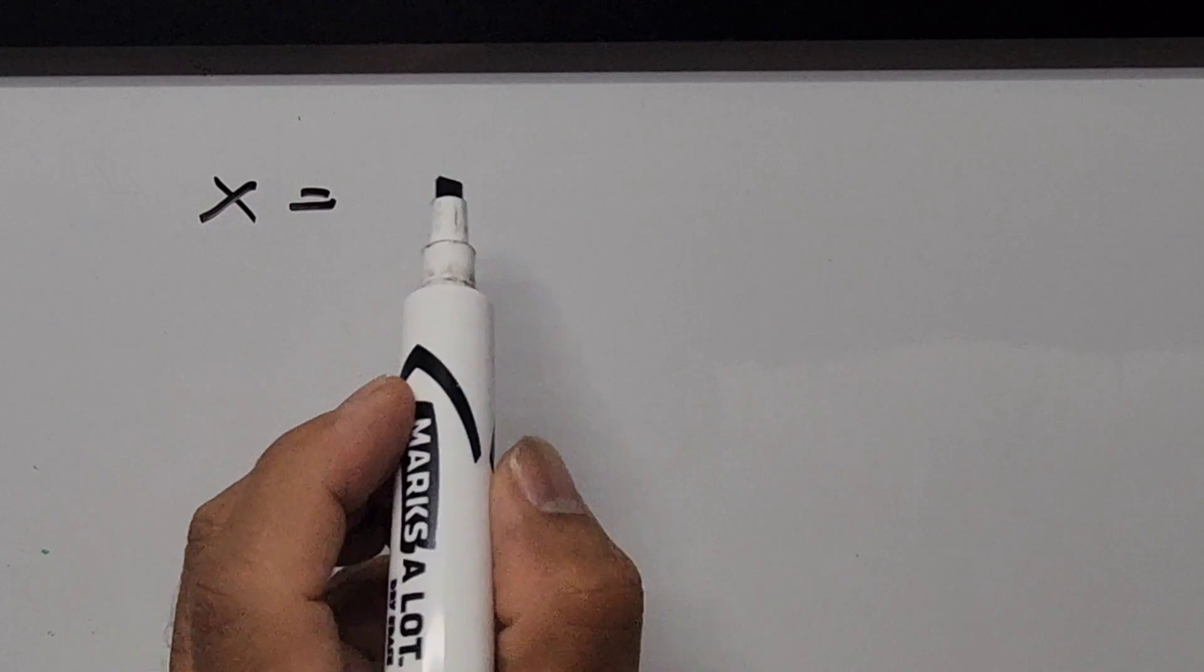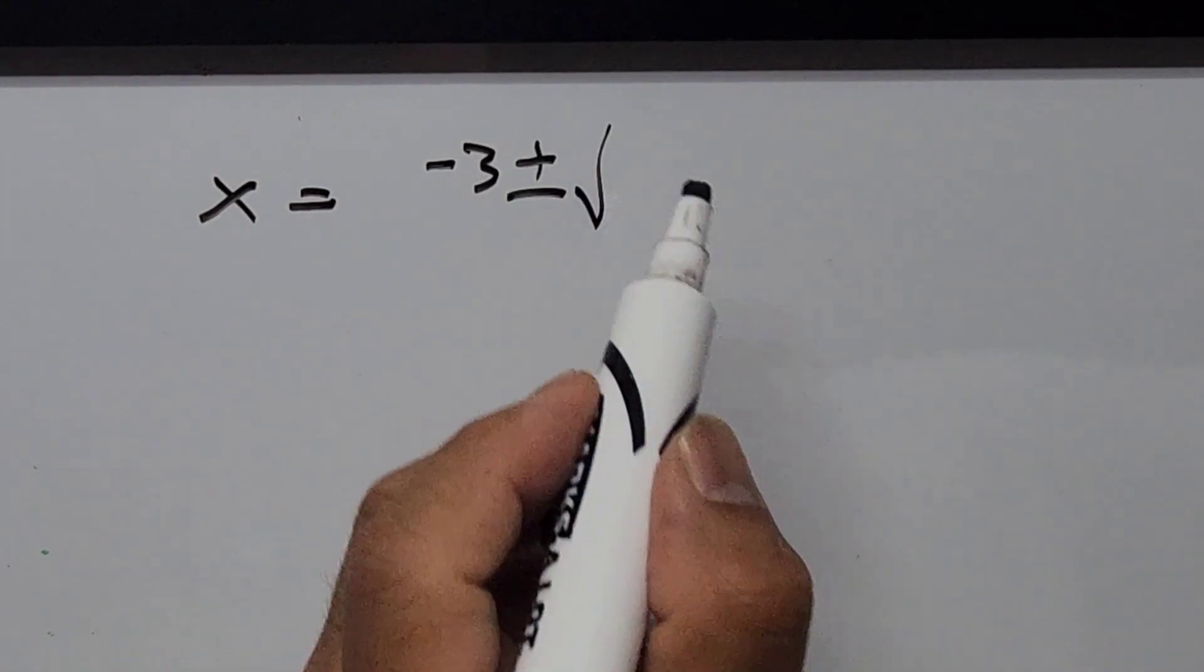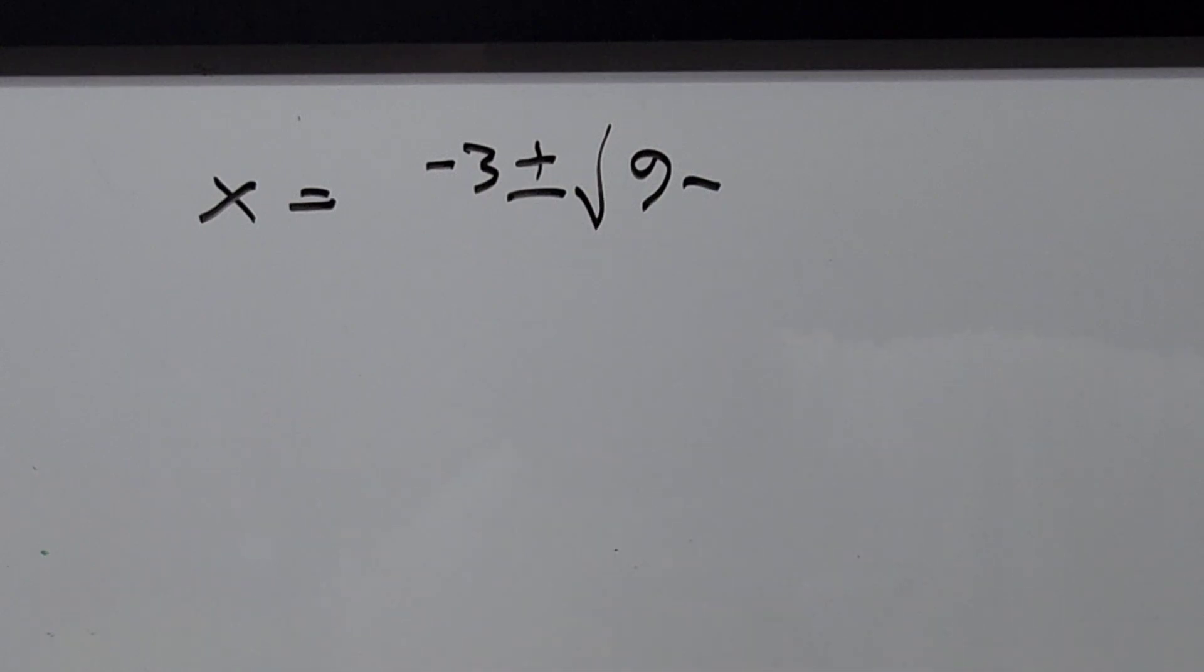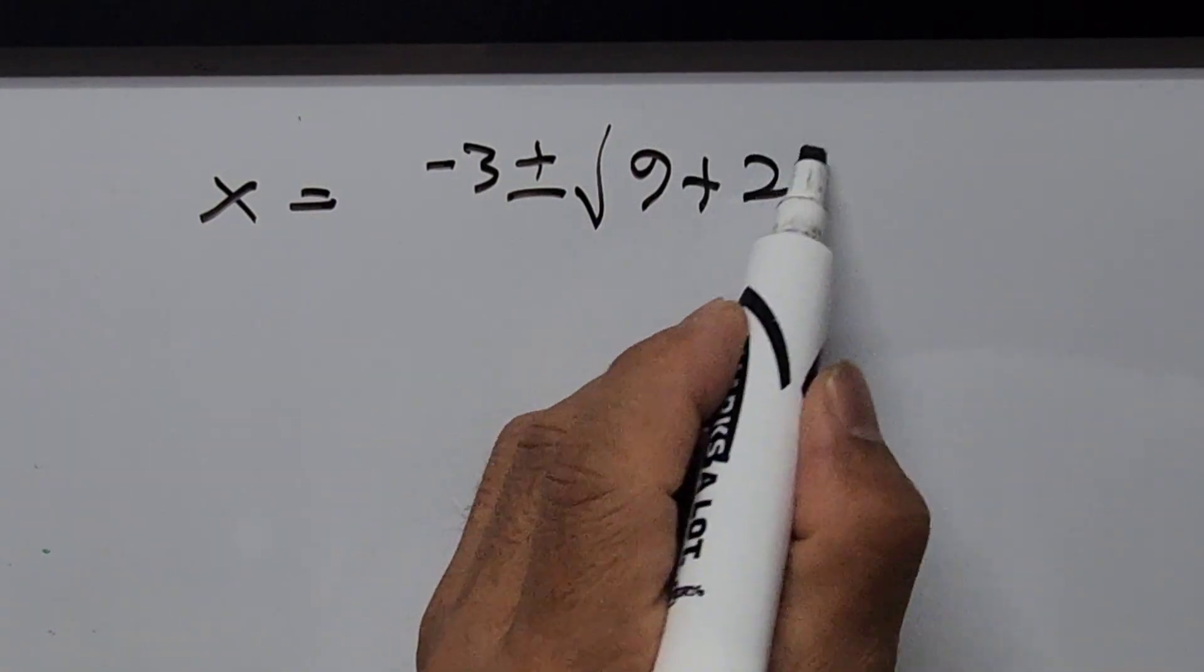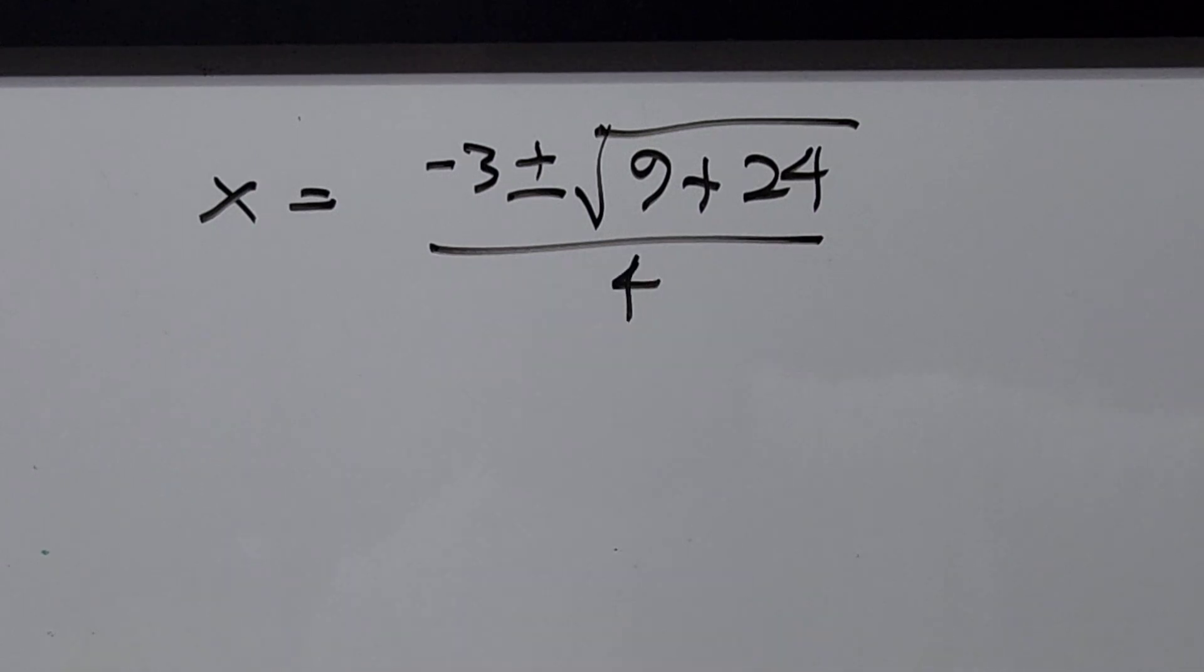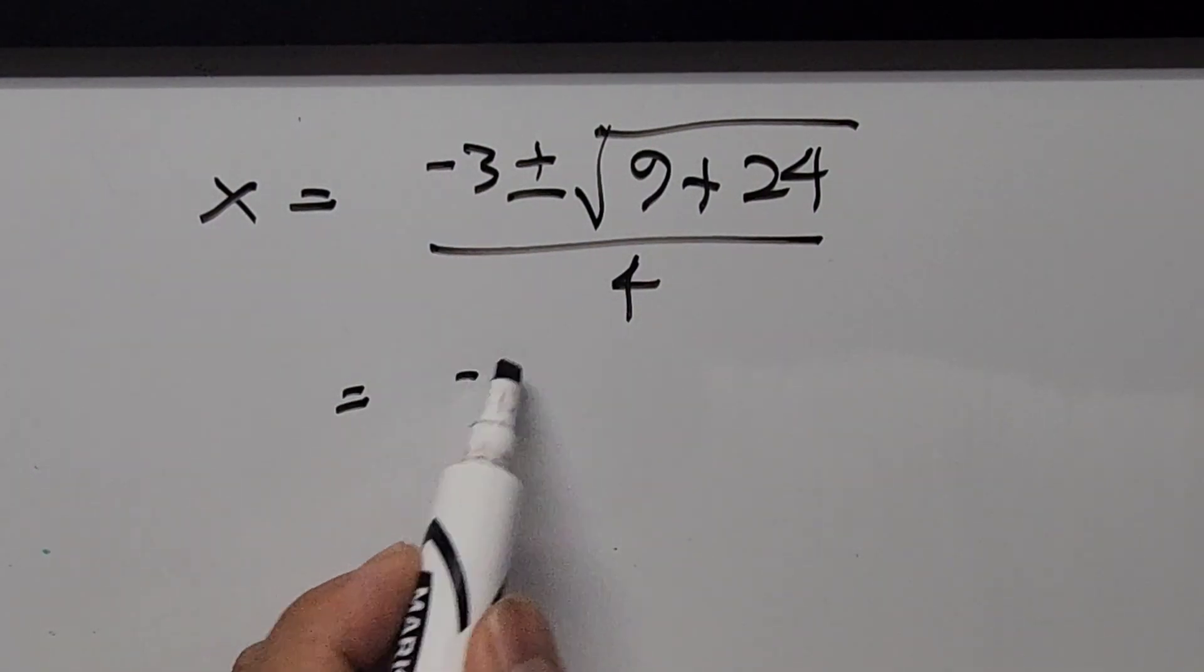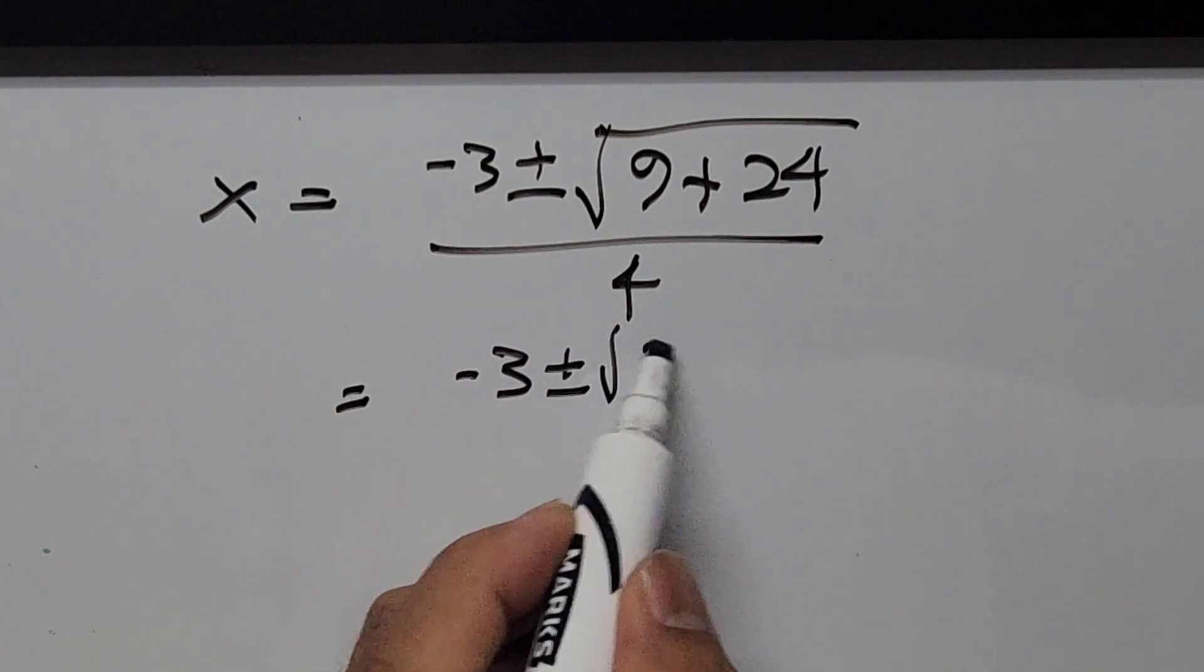I have your value of x is equal to -3 ± √(9 - 4 times 2 times -3 is 24), so positive 24, all over 4. This is equal to -3 ± √33 over 4.